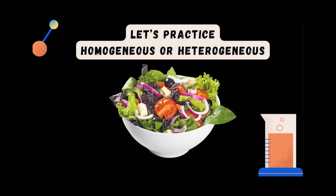Let's practice identifying whether something is homogeneous or heterogeneous. Here we have a salad — is it homogeneous or heterogeneous? The salad is a heterogeneous mixture because you can easily see the different parts, it is very easy to separate, and it is not uniform throughout.